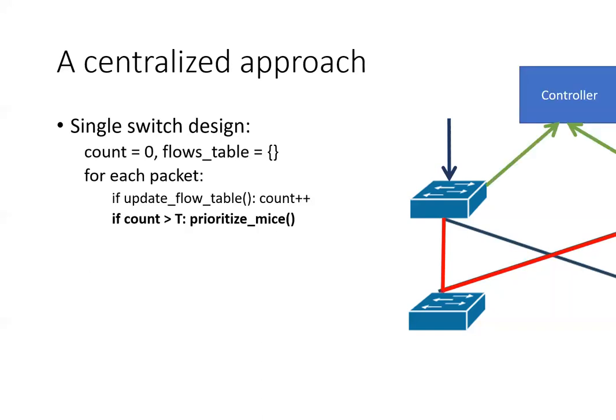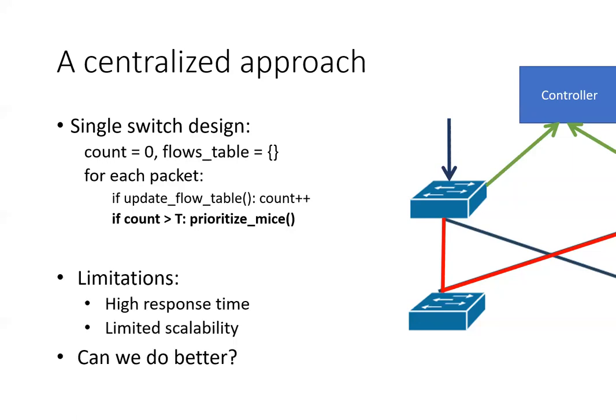So how can we share state? One approach would be to introduce a centralized entity, for example, a controller. The controller can then periodically pull states from the switches and reconfigure the switches accordingly. This method is simple to implement. However, it is unclear how to appropriately set the controller's query frequency, which is important in order to achieve a response time and bandwidth balance. In addition, since the controller must query and aggregate all switches running the application, the controller becomes the bottleneck. And the question is, can we do better?